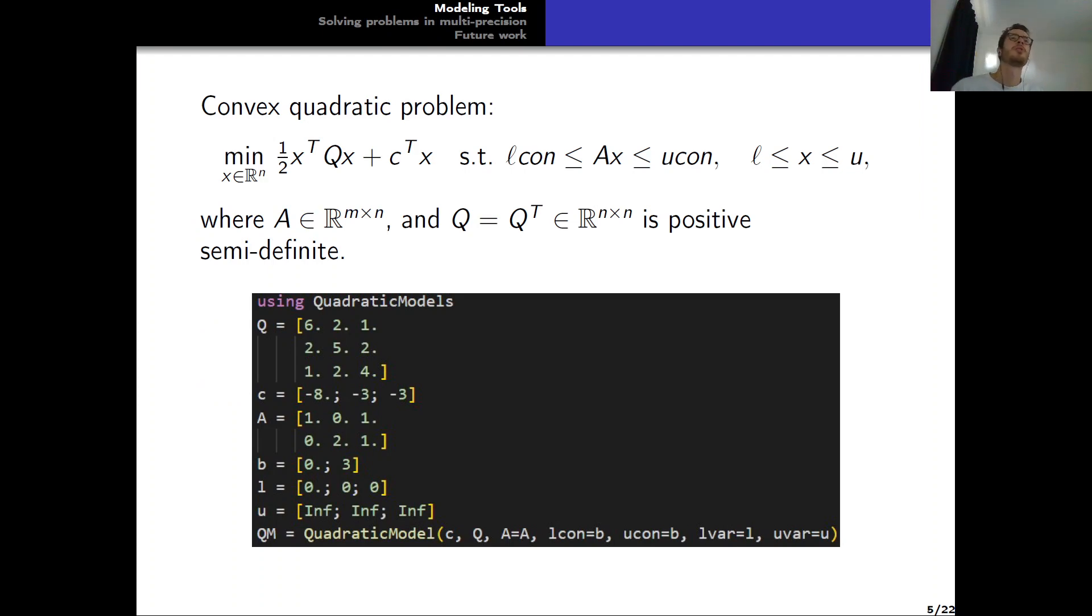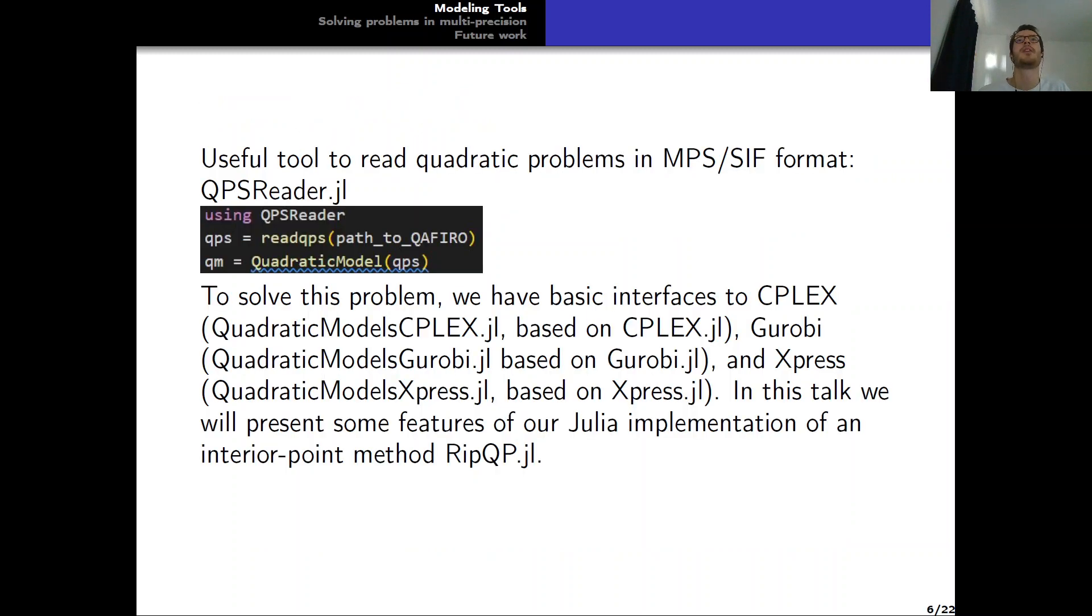So here I have written the convex quadratic problem and how to model it with the Julia package QuadraticModels. As you can see, it is quite easy. You just have to specify the matrices and the vectors of the problem to solve. It's also possible to read easily problems that are written in MPS or SIF format using QPSReader.jl. All you have to do is use the function readqps on the path of the problem to read, and then you can transform the QPS problem into a quadratic model.